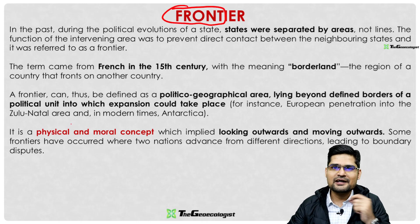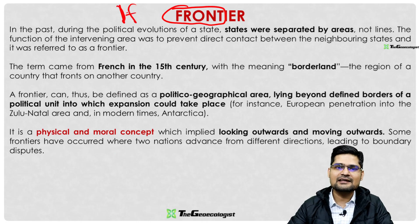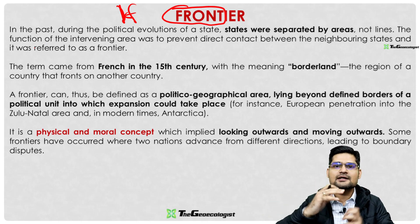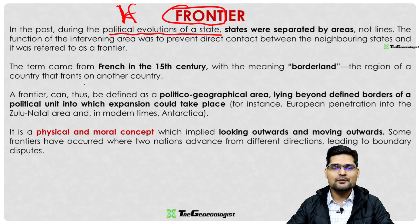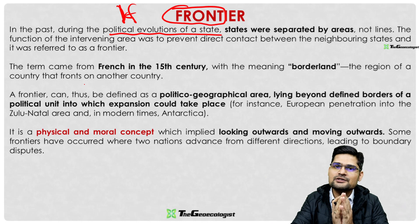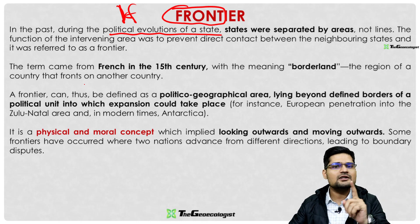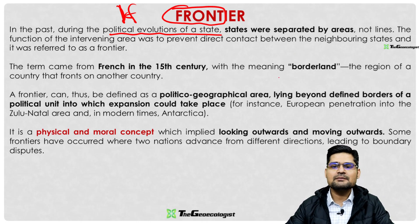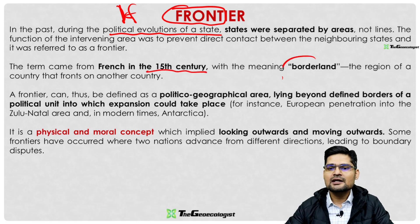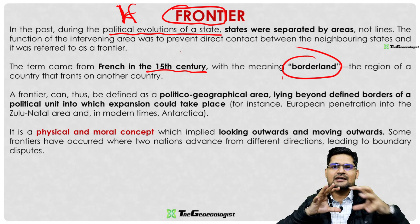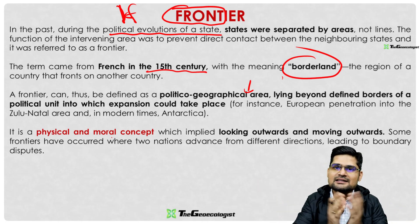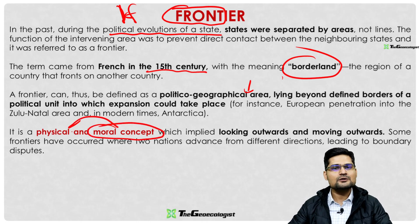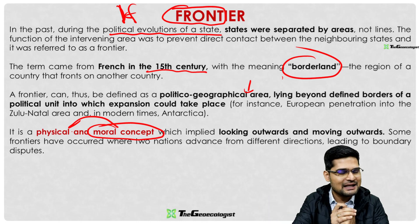The word 'frontier' comes from 'front' — the end portion interacting with the outside. It is an outward-looking idea of territoriality. In past political evolution, states expanded through frontiers; there was no clear-cut boundary jurisdiction during the age of empires. Later, borderlands and formal boundaries emerged. In 15th-century France, 'borderland' described the interaction zone between two states — a frontier may be a group of villages or an extended area.